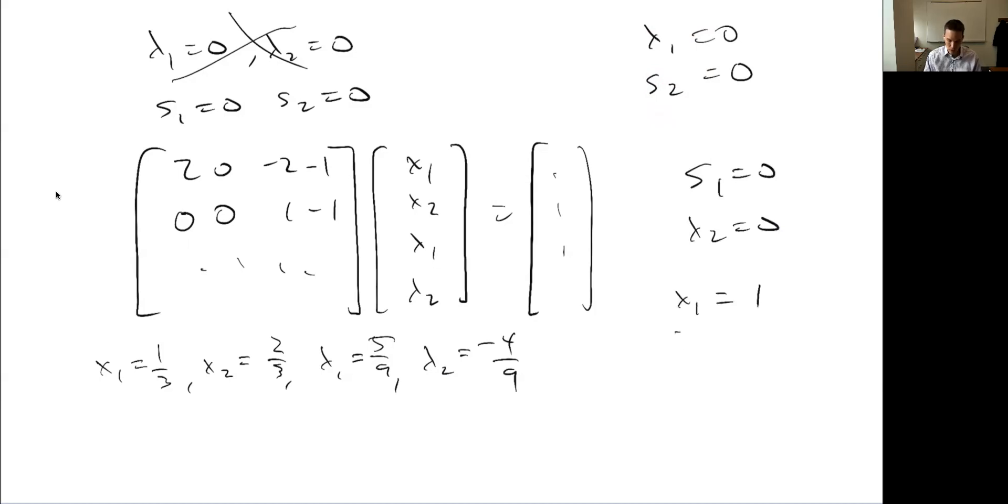X1 equals 1, X2 equals 2, Lambda 1 equals 1, and then the slack variable squared thing here equals 2. So both of my Lagrange multipliers are greater than or equal to 0. So this is a solution. This says that constraint 1 is active, constraint 2 inactive.